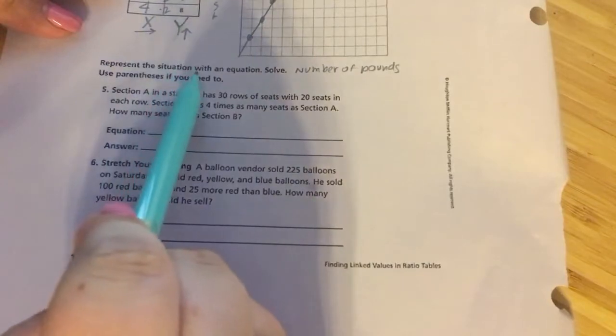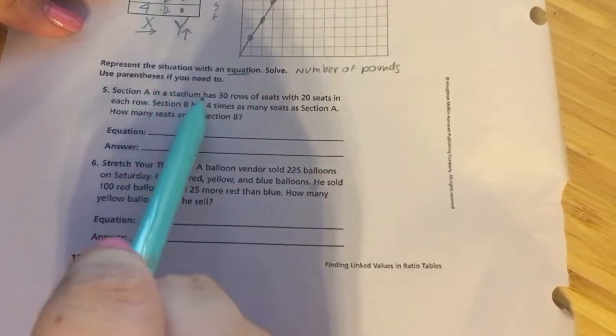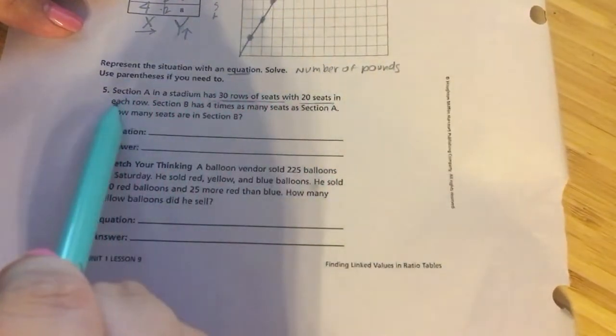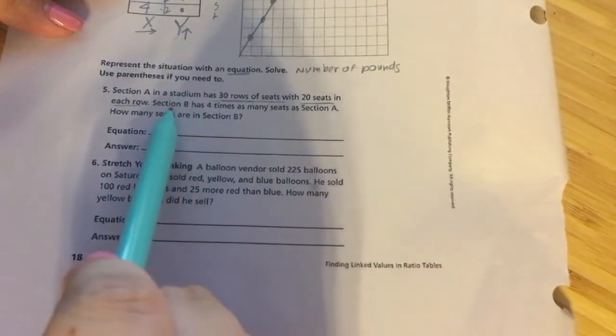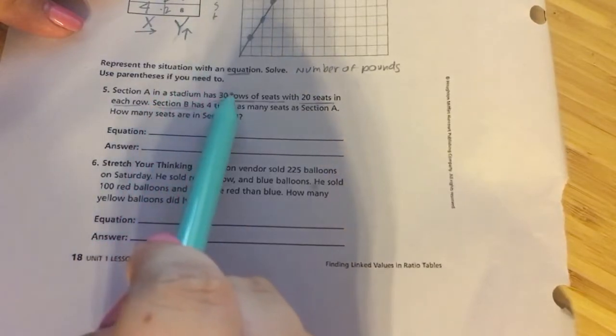So this time, we're representing a situation with an equation. Sometimes writing an equation can be intimidating. So section A in the stadium has 30 rows of seats with 20 seats in each row. Section B has four times as many seats as section A. How many seats are in section B?